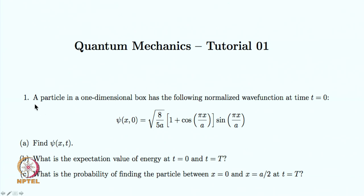Let me read out the question. A particle in a 1-dimensional box has the following normalized wave function at time t equal to 0. The time-independent wave function is given to you, and you are asked to find out the time-dependent wave function. The second part asks for the expectation value of energy at t equal to 0 and at another time t equal to capital T. The third part asks for the probability of finding the particle between x equal to 0 and x equal to a/2 at some instant of time.